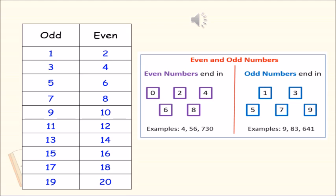The numbers which have 2, 4, 6, 8 or 0 in the ones place are even numbers. And the numbers which have 1, 3, 5, 7, 9 in the ones place are called as odd numbers.